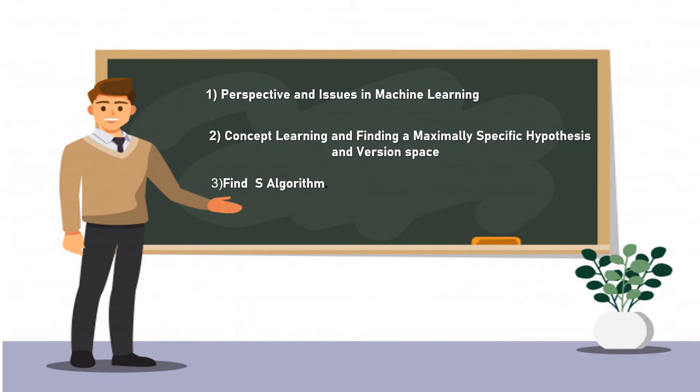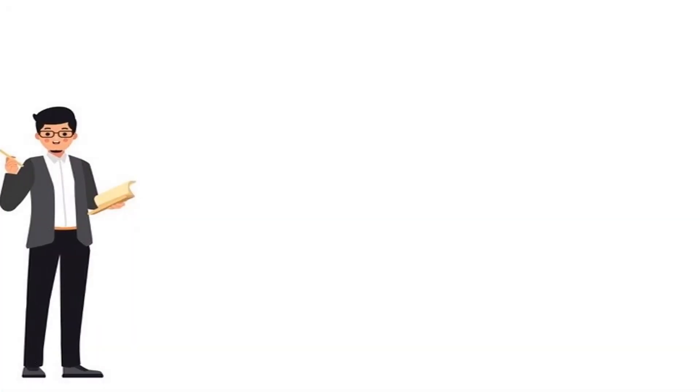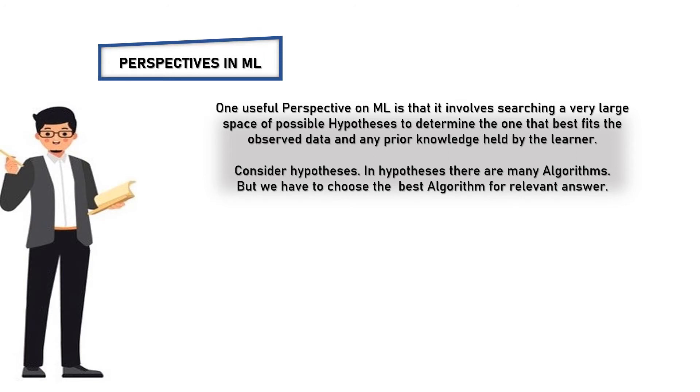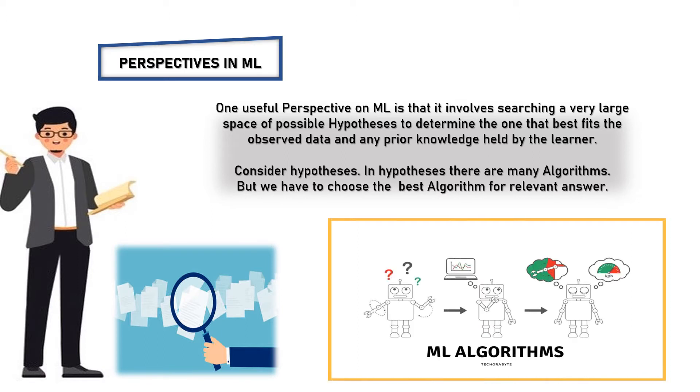Coming to Perspective and Issues in ML, the main perspectives in ML are: One useful perspective on ML is that it involves searching a very large space of possible hypotheses to determine one that best fits the observed data and any prior knowledge held by the learner. Consider hypotheses. In hypotheses there are many algorithms, but we have to choose the best algorithm for relevant answer.